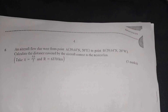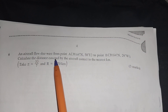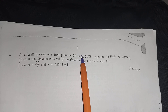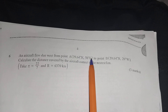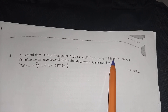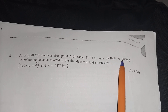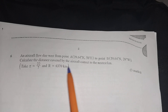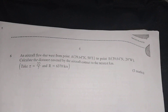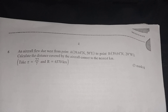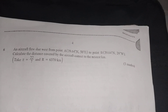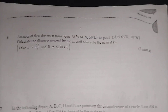They are saying that an aircraft flies due west from point A at 9.64 degrees north, 50 degrees east, to point B at 9.64 degrees north, 20 degrees west. Find the distance covered by the aircraft correct to the nearest kilometer. Take pi to be 22 over 7 and the radius as 6,370 kilometers.